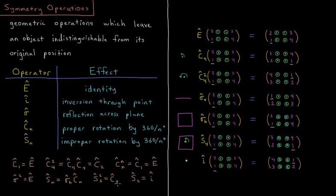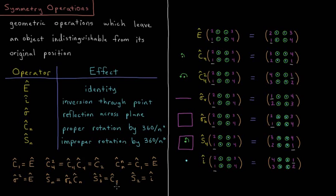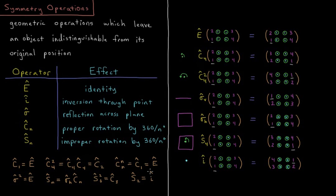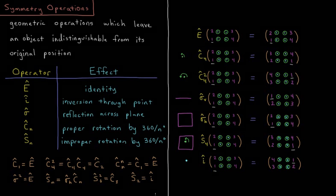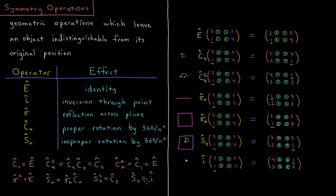For example, s6 squared would be c3, and s4 squared would equal c2. The inversion operator is actually equal to s2, which is rotating by 180 degrees and then reflecting through a perpendicular plane.